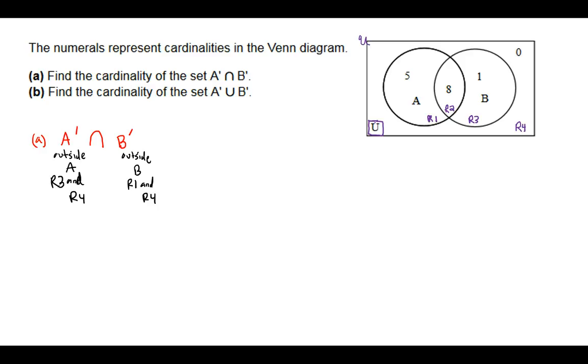This symbol, upside down U, means intersection. And what I want you to think about it, the action that you take is that you look for the overlap between the left and the right.